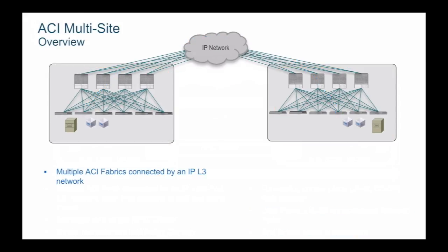ACI multisite consists of multiple ACI fabrics, each with their own leaf-spine topologies connected over an IP network. The IP network provides connectivity between sites and is used to transport control plane traffic using BGP EVPN and data plane traffic using VXLAN between sites, which is very similar to the multipod topology. One key difference is that in ACI multipod, the IP network must support bidirectional PIM multicast traffic to transport BUM traffic between pods, whereas in multisite, ACI uses head-end replication on the spines to transport BUM traffic between sites.